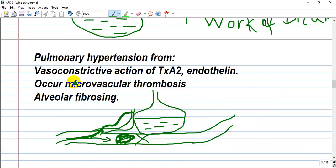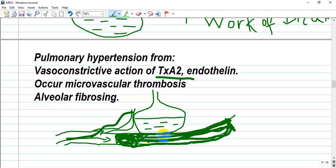Pulmonary hypertension from vasoconstriction action of thromboxane A2 and endothelin. Microvascular thrombosis and alveolar fibrosis occur. So if this segment is occluded or blocked, the following segment will also not be perfused and will become fibrotic.